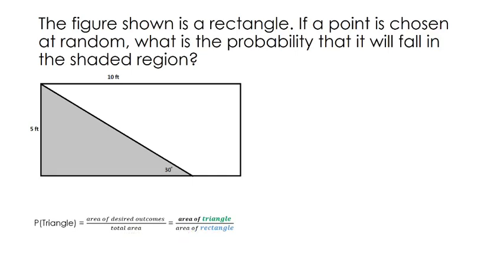We have a couple of sub-problems to solve. For the area of the rectangle, that's the easy part — it's just length times width. We have a length of 10 and a width of 5, so that's 10 times 5, which equals 50 square feet.